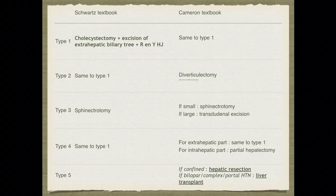For type five (Caroli disease): if it is confined, perform hepatic resection; if it is bilobar or complex with portal hypertension, perform liver transplant. This is the management for choledochal cysts with comparison between Schwartz and Cameron — they are almost the same but Cameron provides more details. Thank you for watching; please share the Suture Master channel where future presentations will be posted.